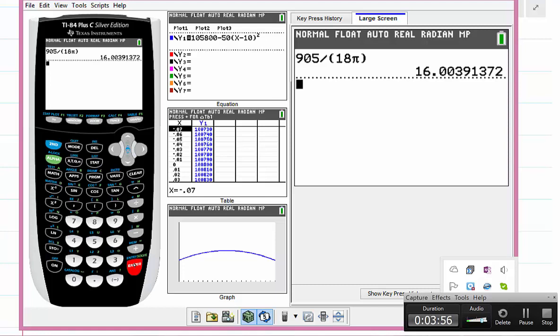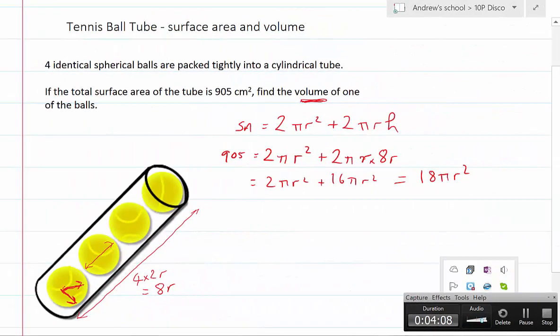So r will be the square root of that, which is of course 4.00. So 905 divided by 18π will leave us r² which is 16.00. So r is 4 cm.